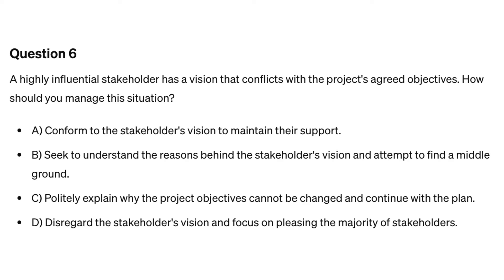Question six. A highly influential stakeholder has a vision that conflicts with the project's agreed objectives. How should you manage this situation? A. Conform to the stakeholder's vision to maintain their support. B. Seek to understand the reasons behind the stakeholder's vision and attempt to find a middle ground. C. Politely explain why the project objectives cannot be changed and continue with the plan. D. Disregard the stakeholder's vision and focus on pleasing the majority of stakeholders.